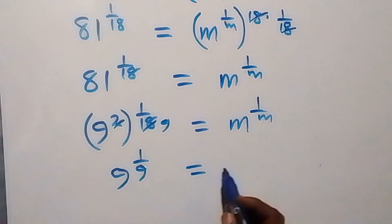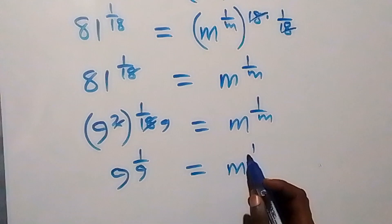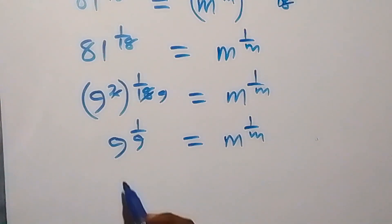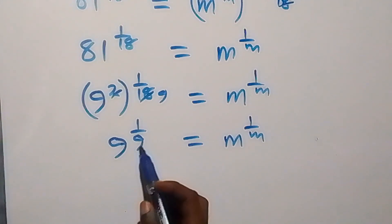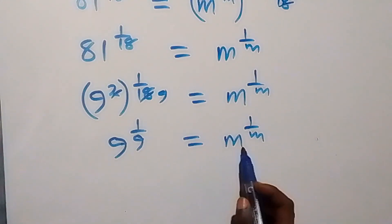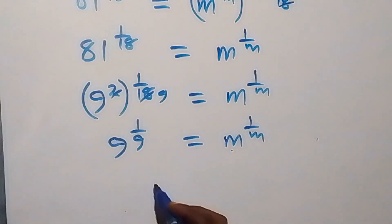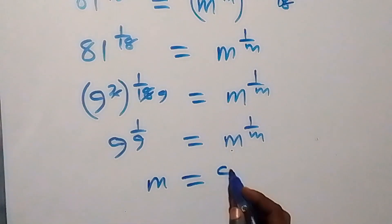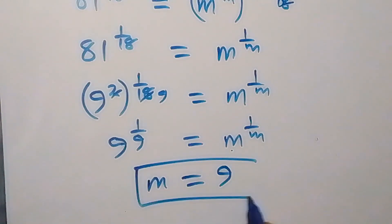Comparing both sides, the base on the left corresponds to the denominator in the exponent on the right. We can see that the base 9 matches the denominator m, allowing us to conclude that m is equal to 9. That completes the first method.